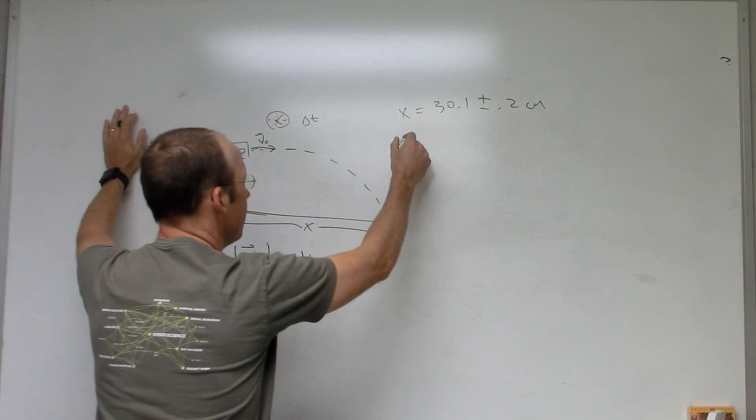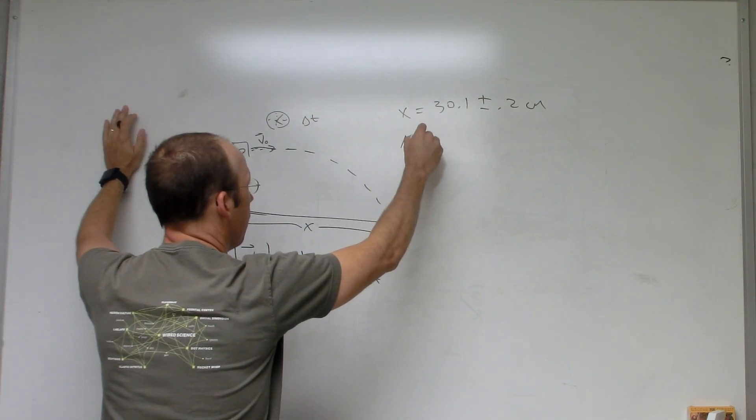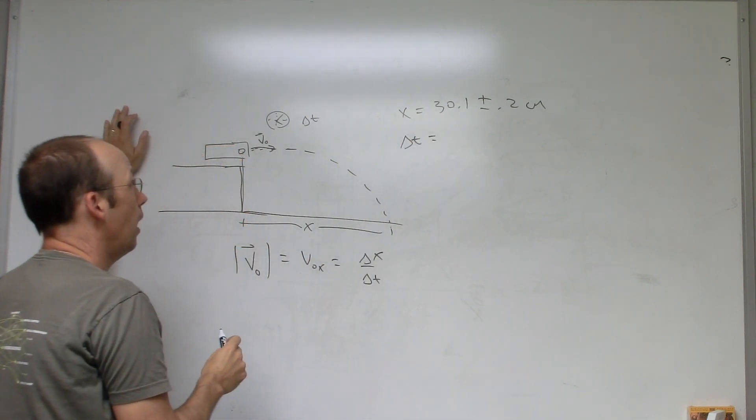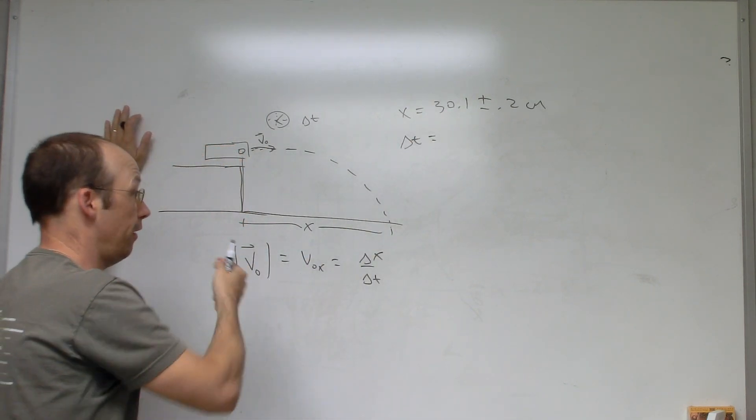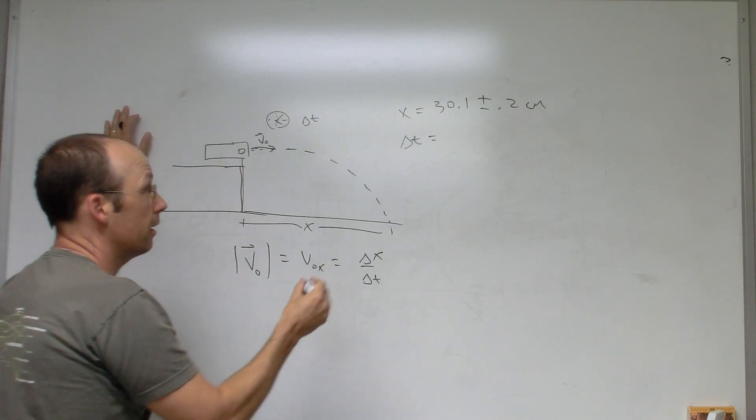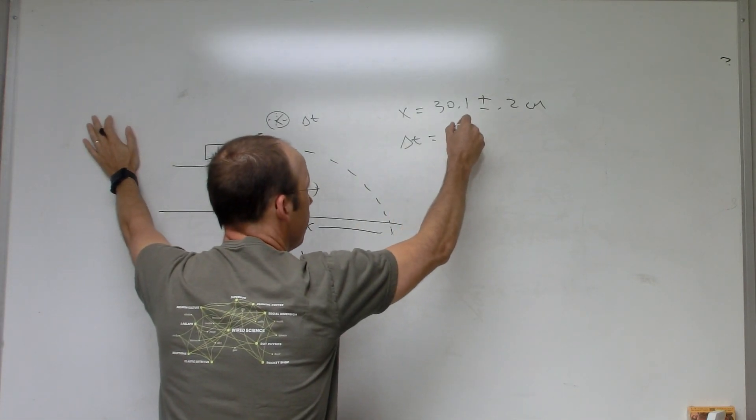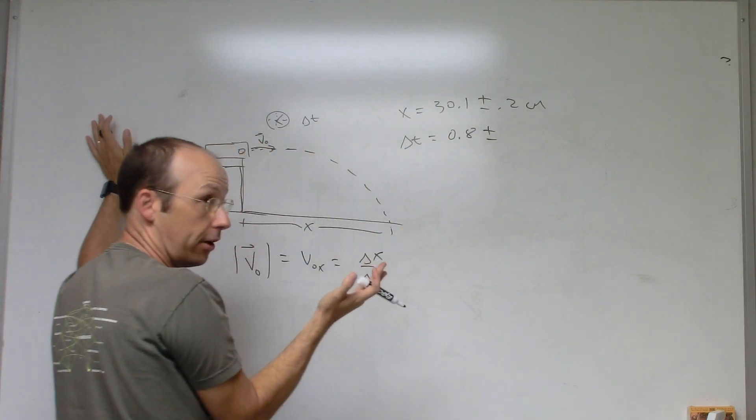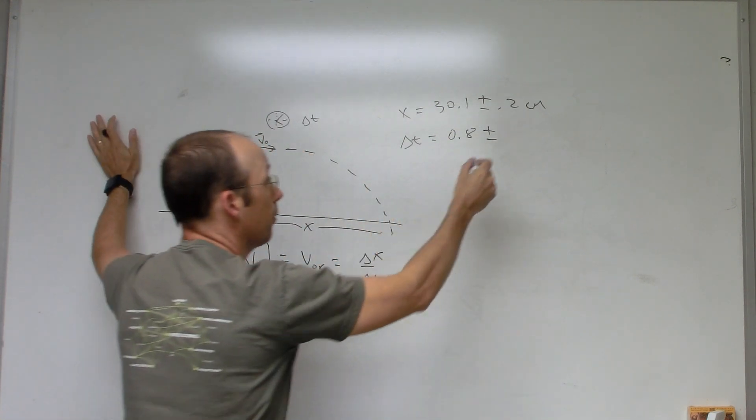And what about the time Delta T? You can use a stopwatch, and every time you shoot it you start the stopwatch, you stop the stopwatch, and that's it. Let's say I get 0.8 plus or minus 0.3 seconds. I find the standard deviation to find uncertainty for that one too.